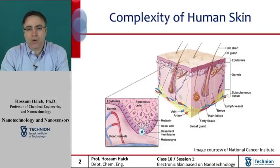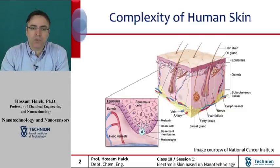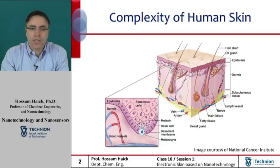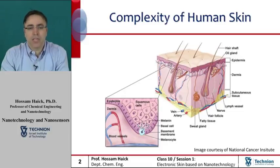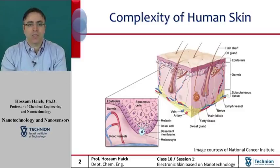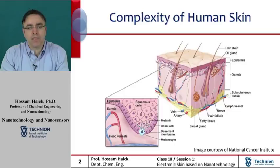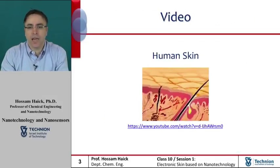The skin is the largest organ of the human body with a total area of around 20 square feet. The skin protects us from microbes, prevents infection, and manufactures vitamin D for converting calcium into healthy bones. The skin is a huge sensor packed with nerves for keeping the brain in touch with the outside world. Skin allows us free movement and helps regulate body temperature, permitting the sensations of touch, heat, and cold.